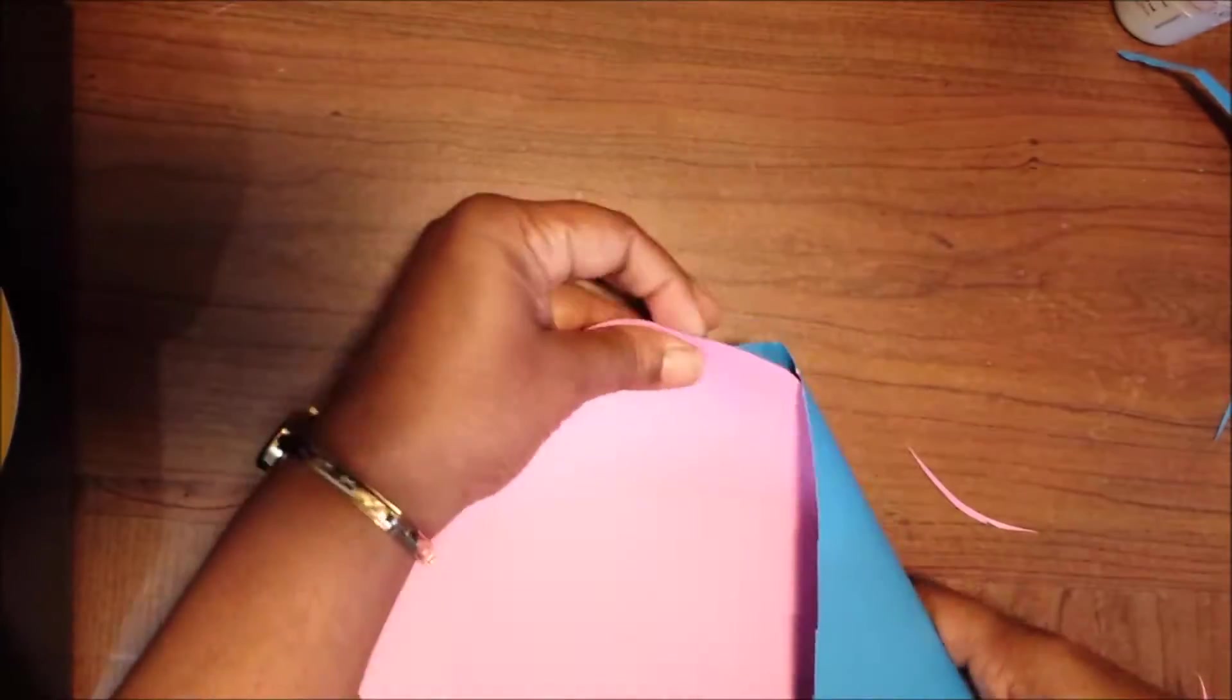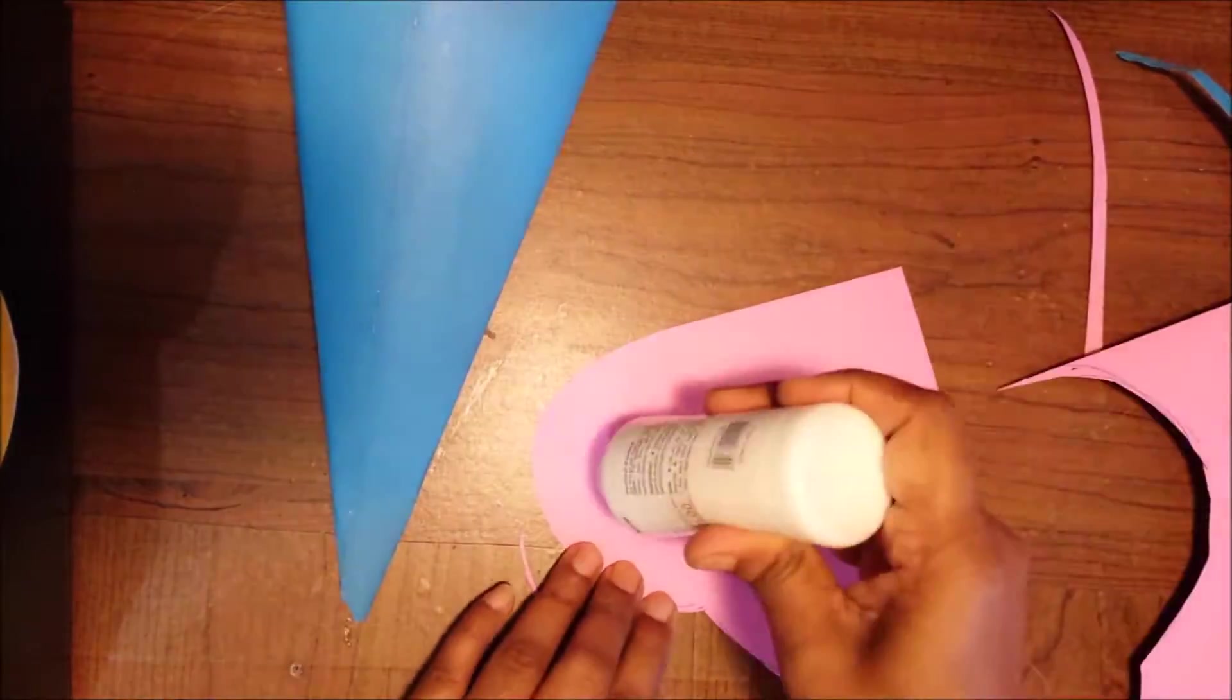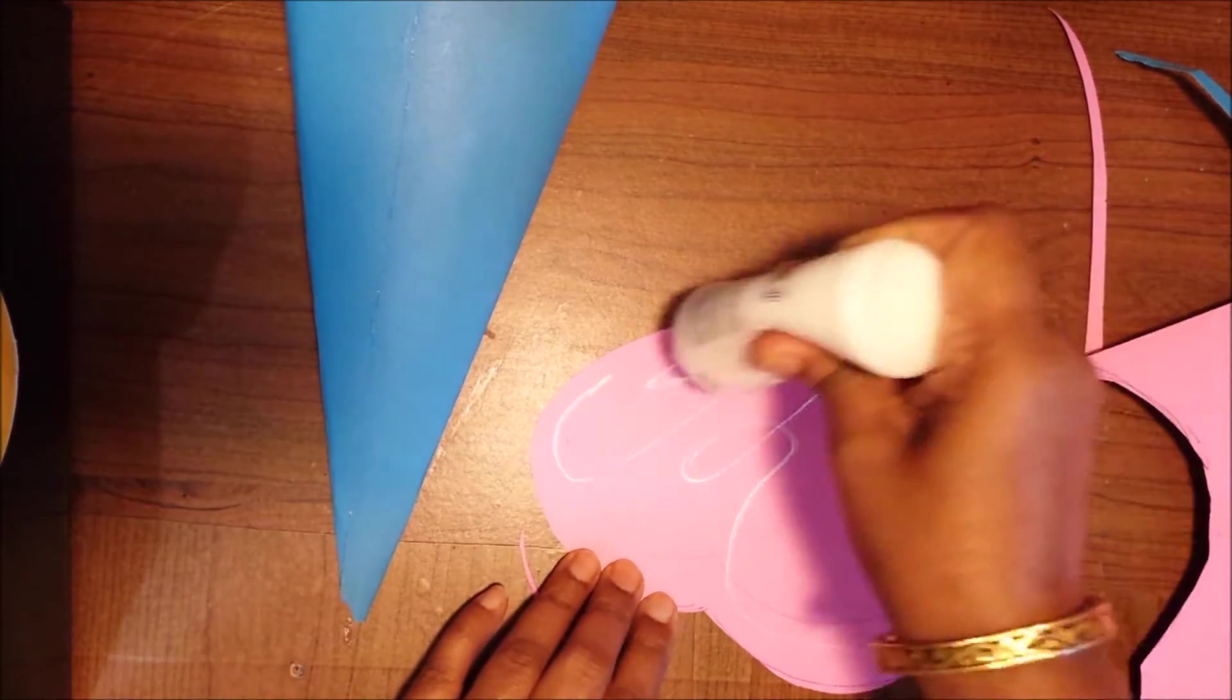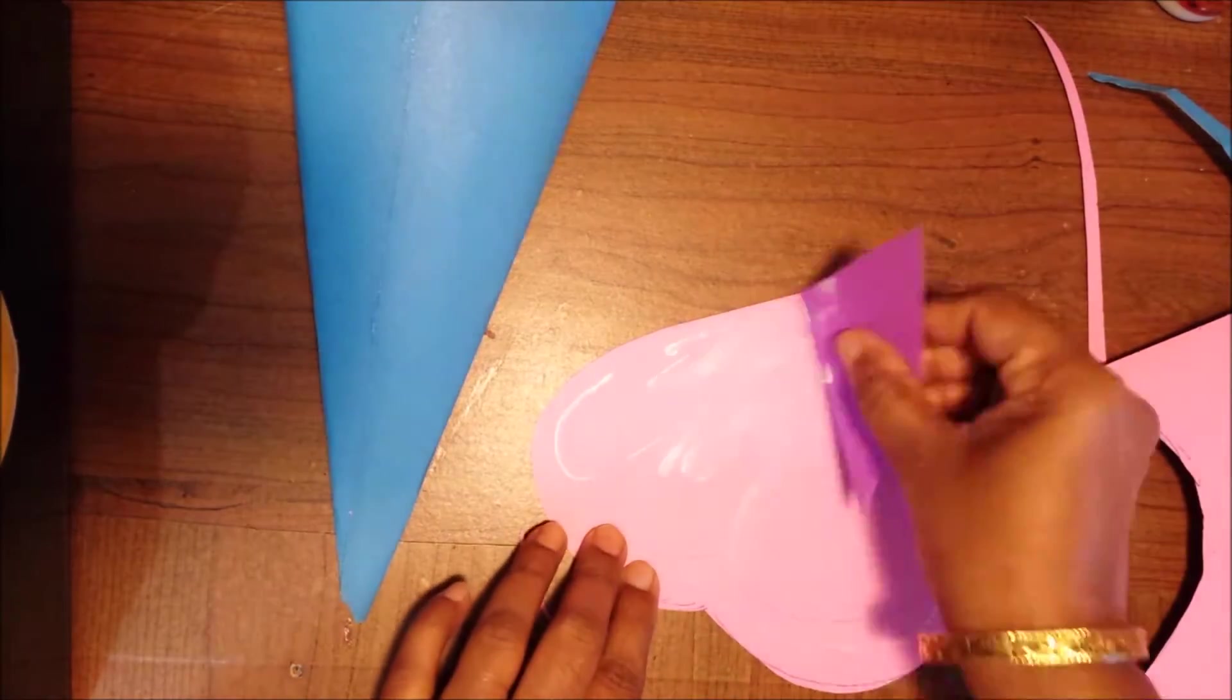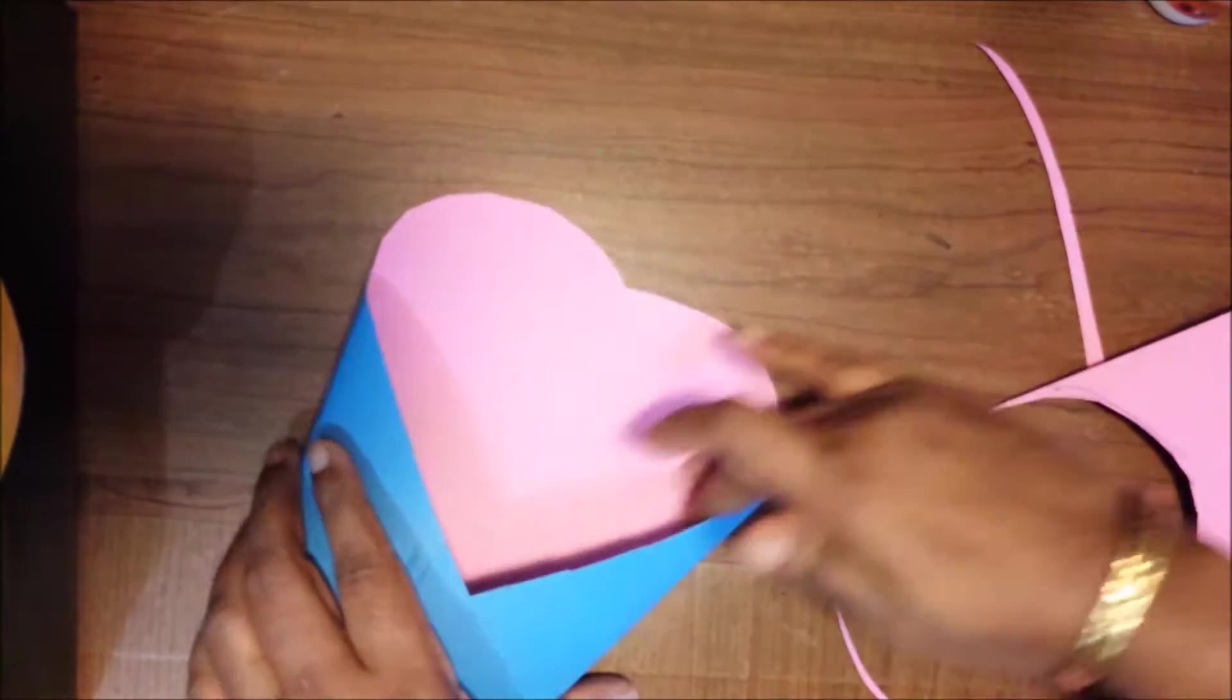This heart we will insert in this cone. After the same shape heart, we'll take three, four, five, six, however much you want, that much you can cut it. Now we'll stick it.